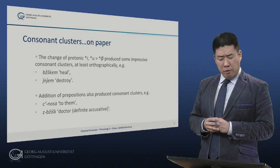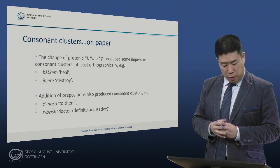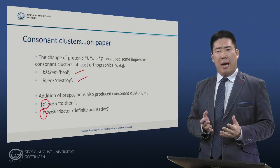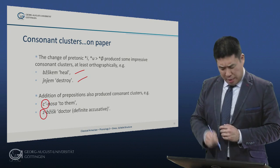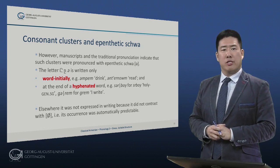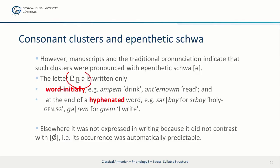This vowel weakening produced some impressive consonant clusters, at least on paper. Orthographically, we have impressive clusters such as b-zh-sh-k-e-m ('I heal') and zh-n-zh-e-m ('I destroy'). Addition of prepositions could also produce impressive consonant clusters — for example, the preposition tse plus nosa ('to them'), or zh (definite accusative marker) plus b-zh-e-sh-k ('doctor') giving the definite accusative. Were these actually consonant clusters, or is something else going on? Manuscripts and the traditional pronunciation agree that such clusters were in fact pronounced with epenthetic schwa. There is a letter schwa in the Armenian alphabet, but it is written only rarely.